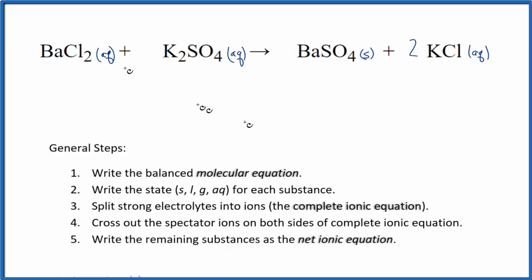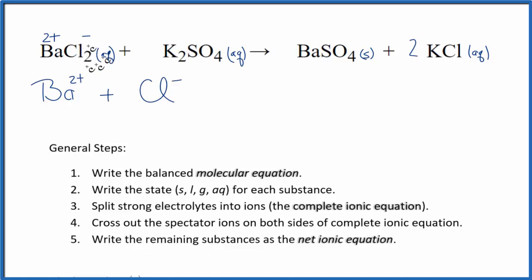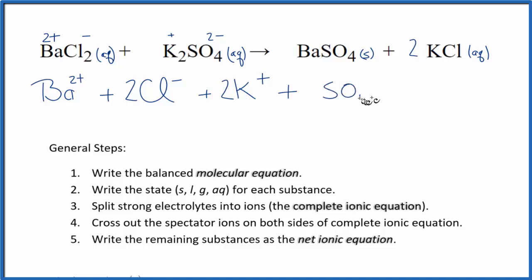The strong electrolytes are the ones with (aq) after them. We need to figure out the charge. Barium is in group 2 on the periodic table, so it's 2+. The chloride ion is minus. So we have Ba²⁺ plus Cl⁻ — and the subscript 2 means we have two of those. Potassium is in group 1, it has a 1+ charge. And then sulfate is a polyatomic ion — it always has a 2− charge. So we have plus 2K⁺, the potassium ion, plus SO₄²⁻, the sulfate ion.